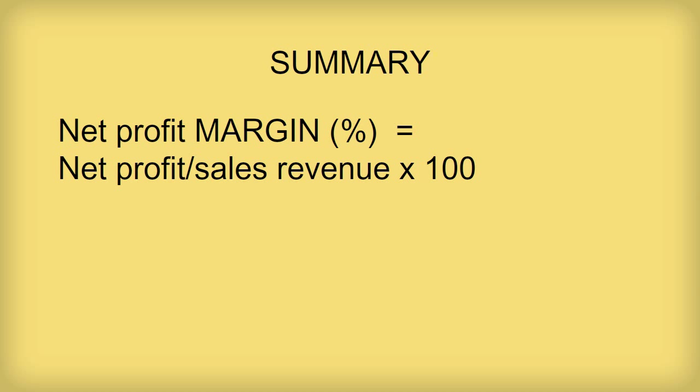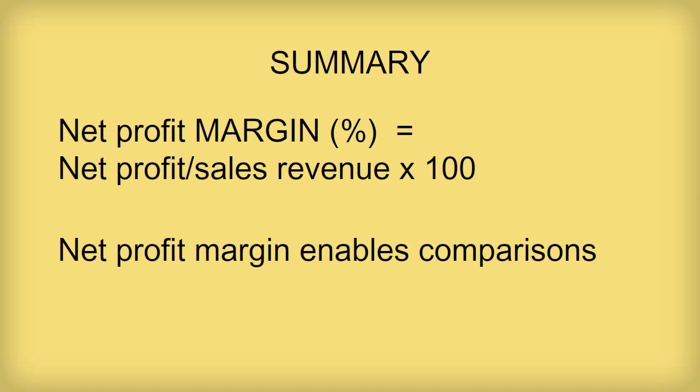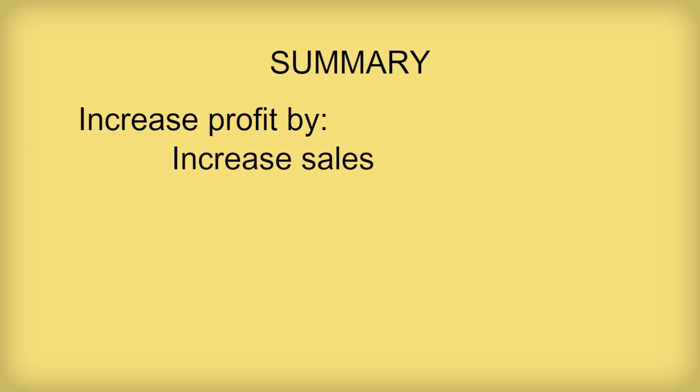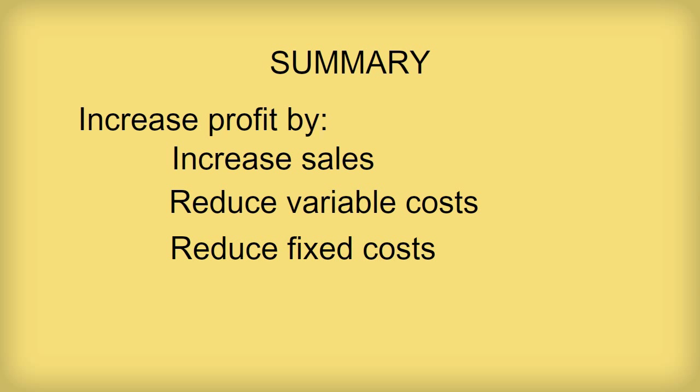To sum up. Net profit margin is net profit expressed as a percentage of sales revenue. One reason for calculating net profit margin is to compare the performance of a business with other businesses. Businesses need to make a profit that represents an acceptable return on capital. Return on capital is net profit as a percentage of capital invested. And there are four ways in which a firm can increase its profit: increase sales without reducing net profit margin, by reducing variable costs, by reducing fixed costs, or by increasing price.